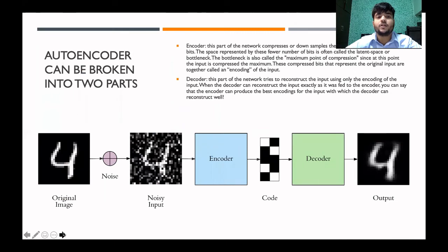An autoencoder can be broken into two parts: encoder and decoder. The encoder part of the network compresses or downsamples the input into a fewer number of bits. The space represented by these fewer bits is often called latent space or bottleneck. The bottleneck is also called the maximum point of compression, since at this point the input is compressed the most. These compressed bits that represent the original inputs are together called the encoding of the input.